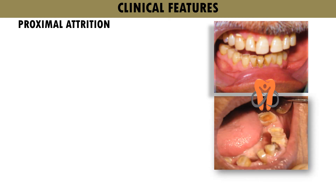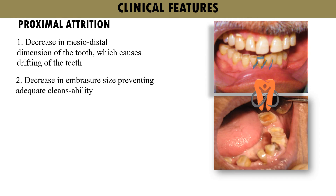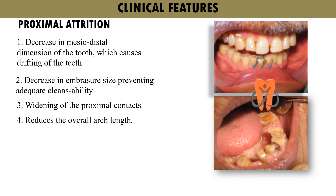Proximal attrition occurs on the proximal surfaces and results in a decrease in the mesiodistal dimension of the tooth, causing drifting of teeth. It also results in a decrease in embrasure size preventing adequate cleanability, widening of the proximal contacts, and a reduction in overall arch length.